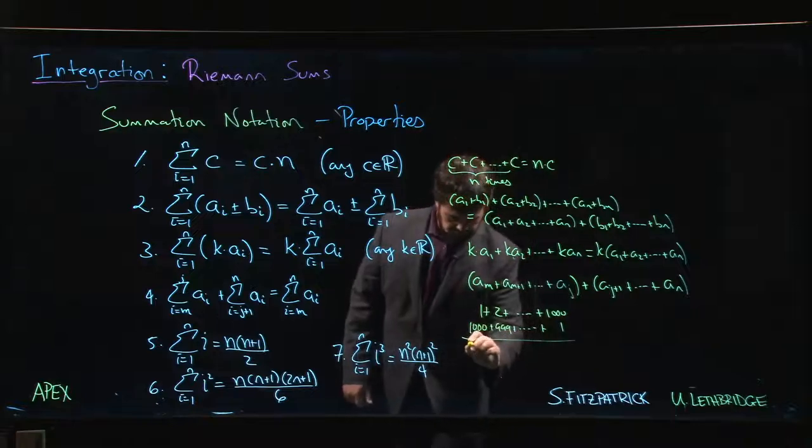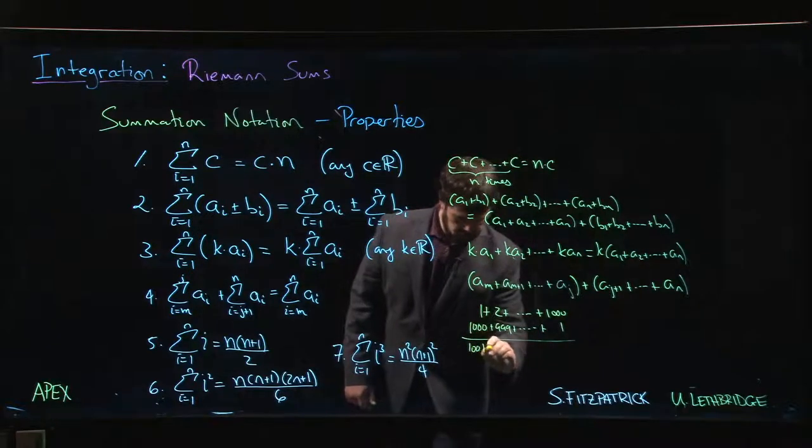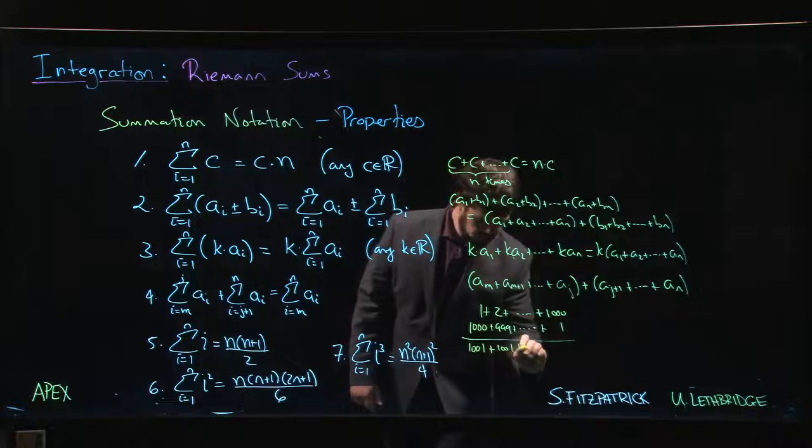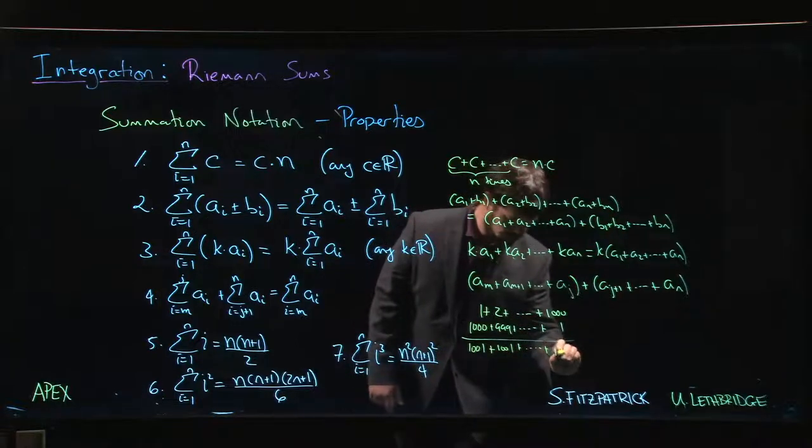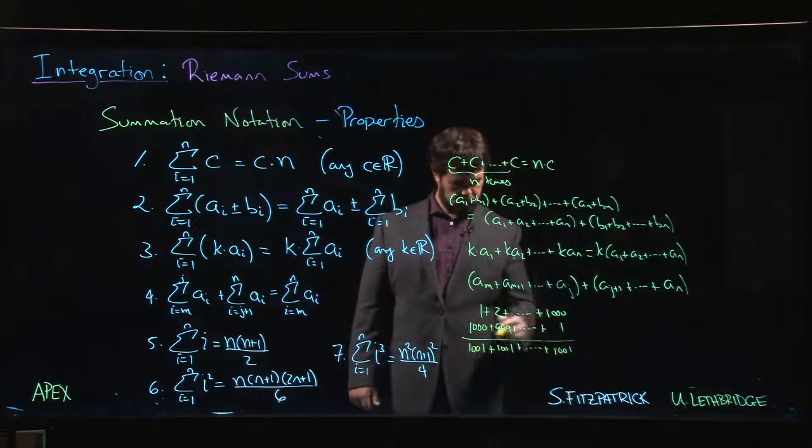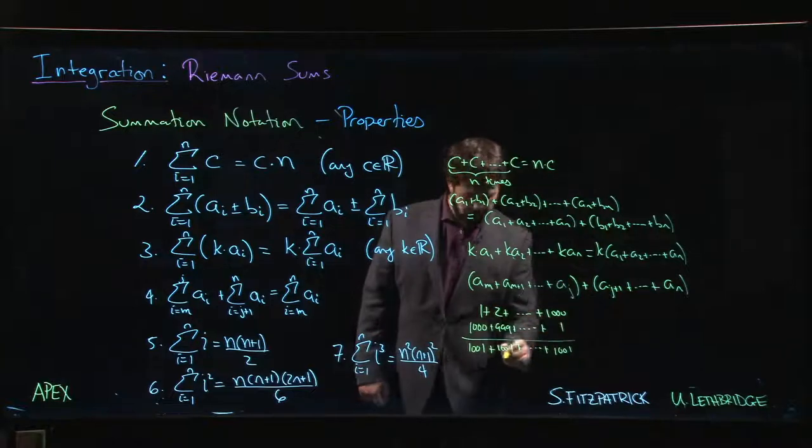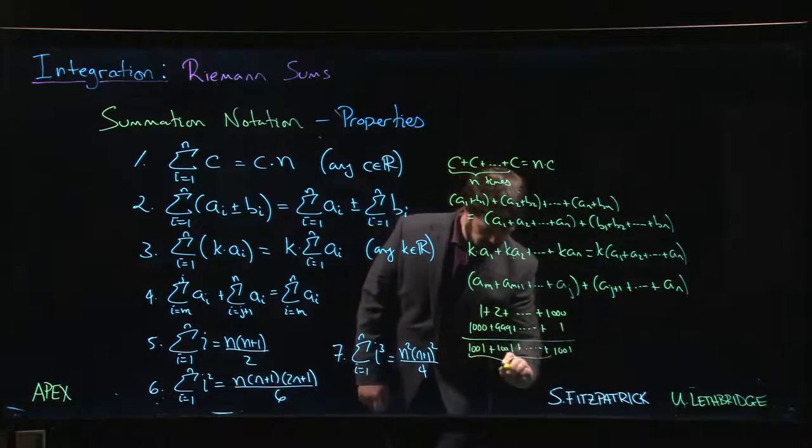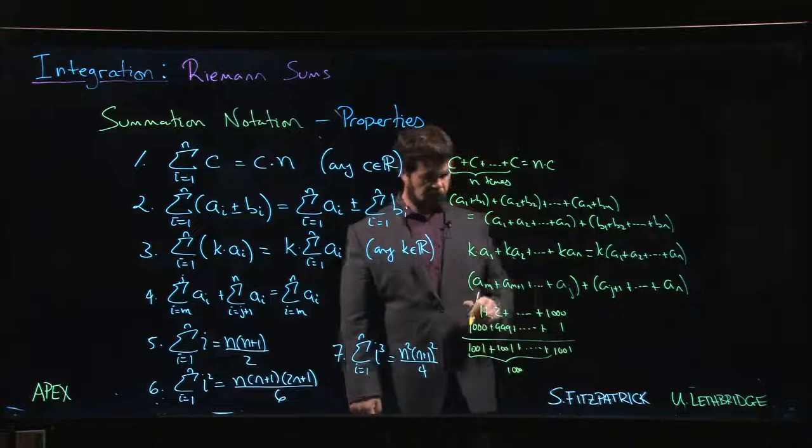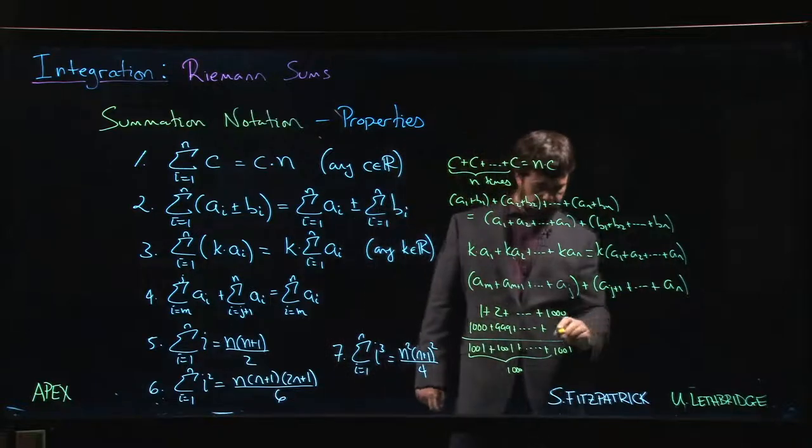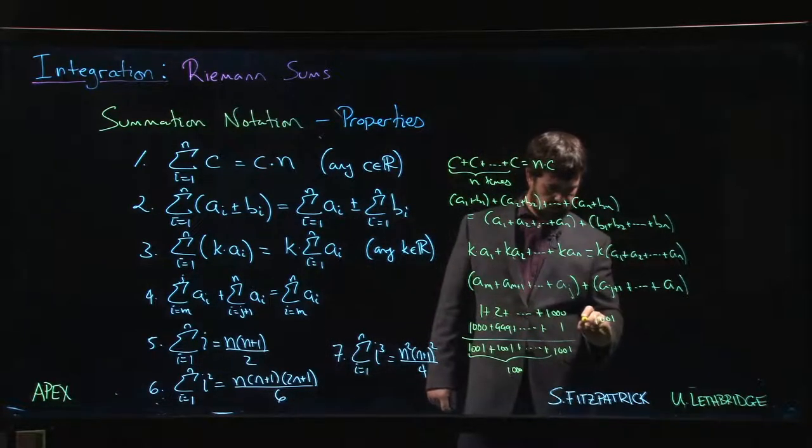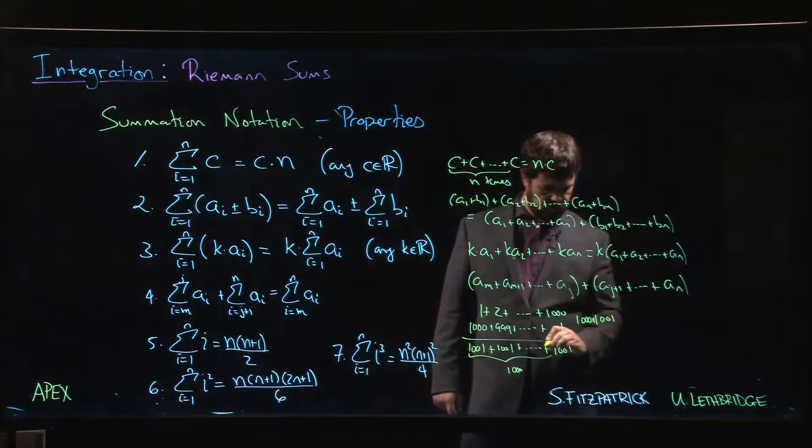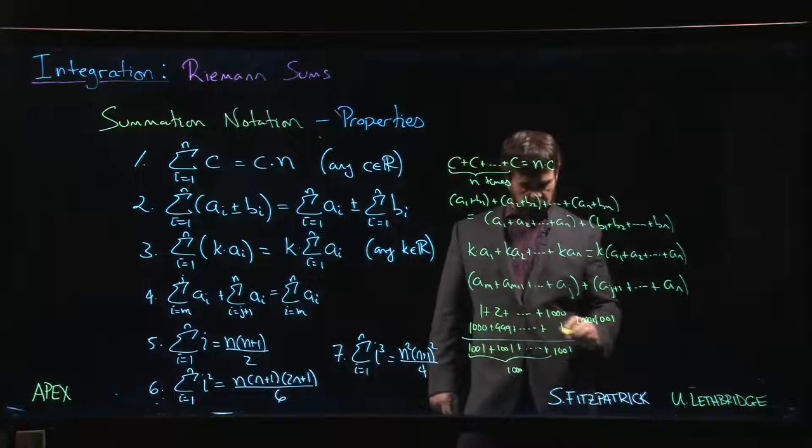He said, 'Okay, but if I add that up, I've got a thousand and one plus a thousand and one, and there's a thousand of these.' So he said, 'My answer is going to be a thousand and one, but I'm adding that a thousand times. Oh, but that's twice the sum that I really wanted, so my original answer I should divide by two.'